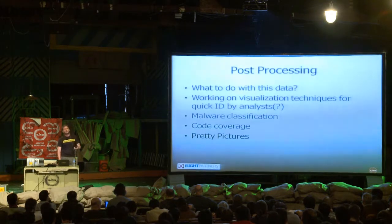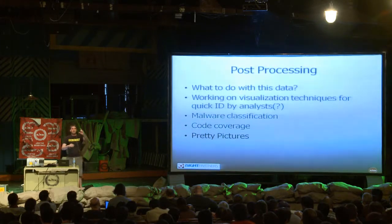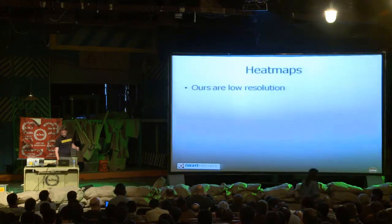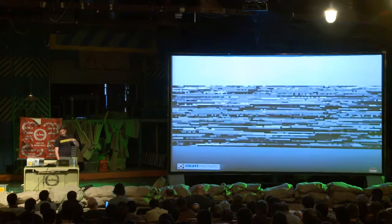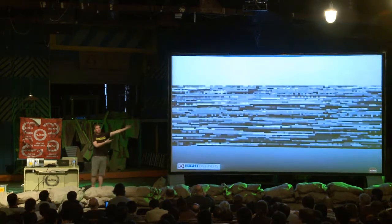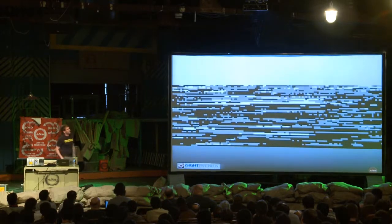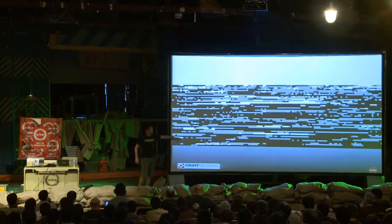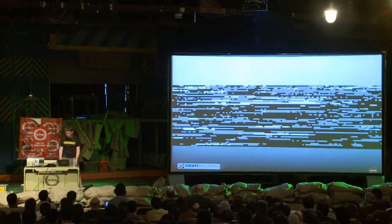Post-processing — what do you do with this data? You've got all these basic blocks. You know which jumps were taken and which weren't. We have some ideas. We're doing heat maps: code that's called a lot we light up in grayscale — make it white. Here's a piece of malware and this represents its entire memory space during execution. We run some filtering and get a better idea of what it looked like. The idea is that we can match similar samples based on which code was hot.